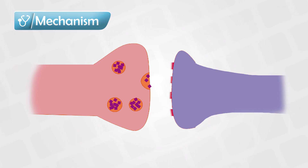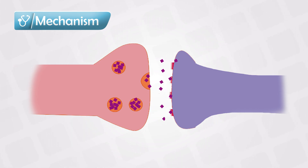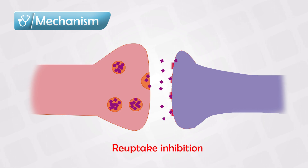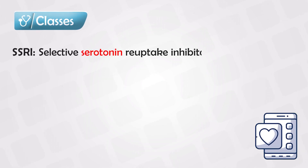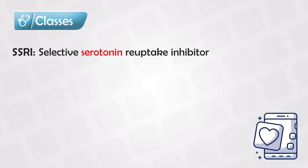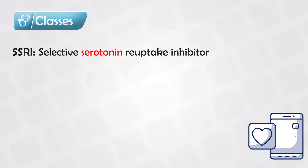We have developed some medications that simply block this action. So once the first neuron sends some molecules, they will be trapped in the synaptic area and continue stimulating the second neuron. This action is known as reuptake inhibition, from which we have the most commonly used antidepressant: SSRIs, which stands for Selective Serotonin Reuptake Inhibitors. They basically selectively inhibit the reuptake of only serotonin.